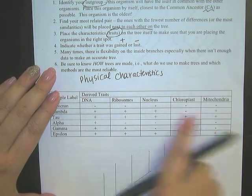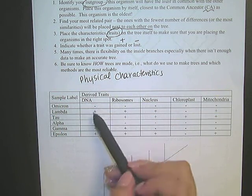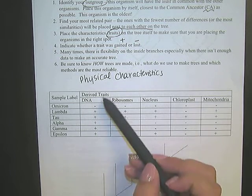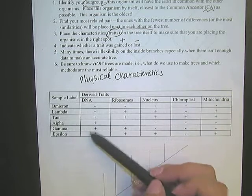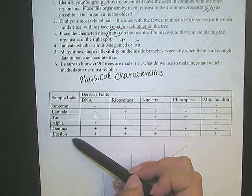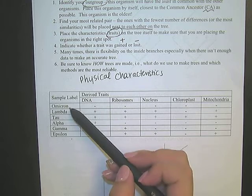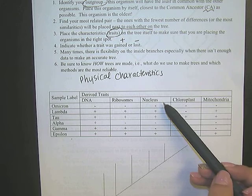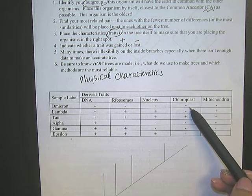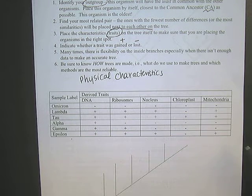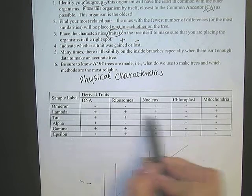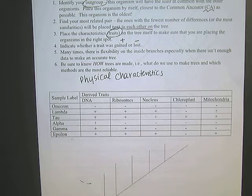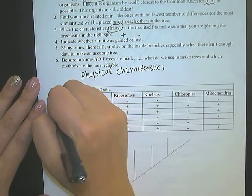We're looking at a particular trait. In this case, we're looking at the bringing in of a particular organelle. And it is indicated on this chart whether or not the organism, the sample that you were given, has that particular trait. So for example, Omicron does not have DNA, does not have ribosomes, does not have nucleus, does not have chloroplasts, and does not have a mitochondria. So because Omicron here has nothing in common with any of these, or I should say the least in common, then Omicron is going to be your outgroup. So this is your outgroup.